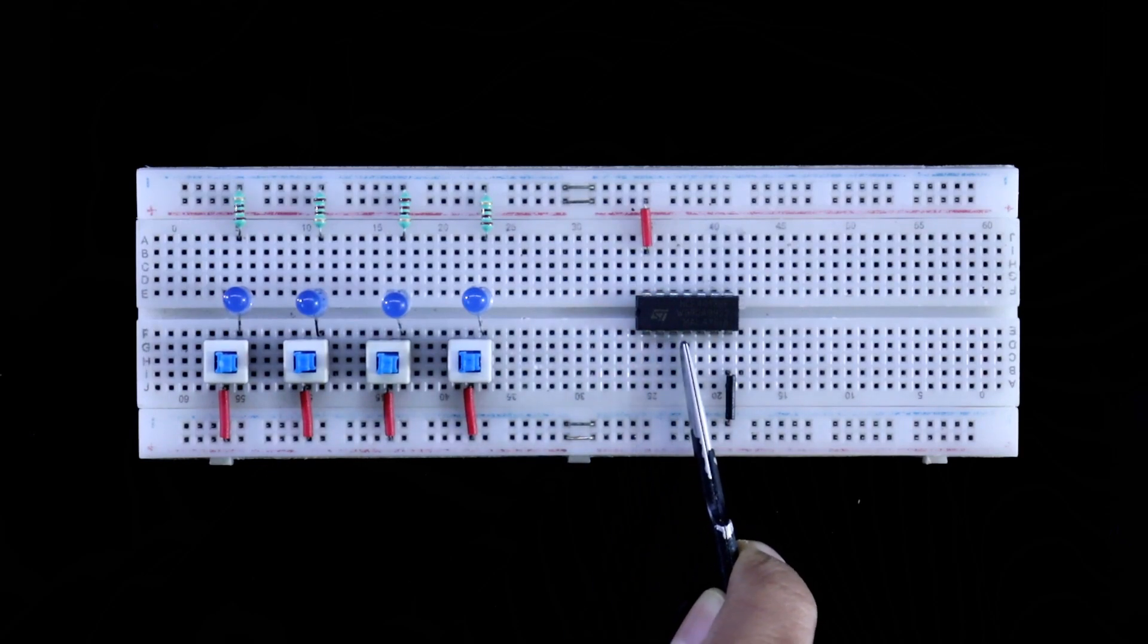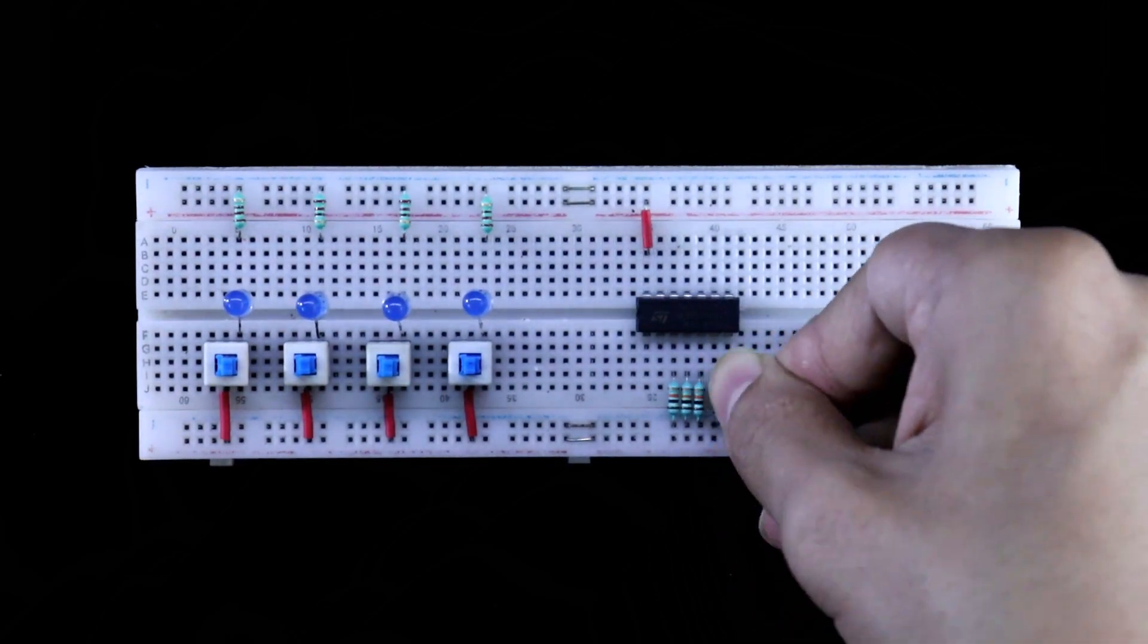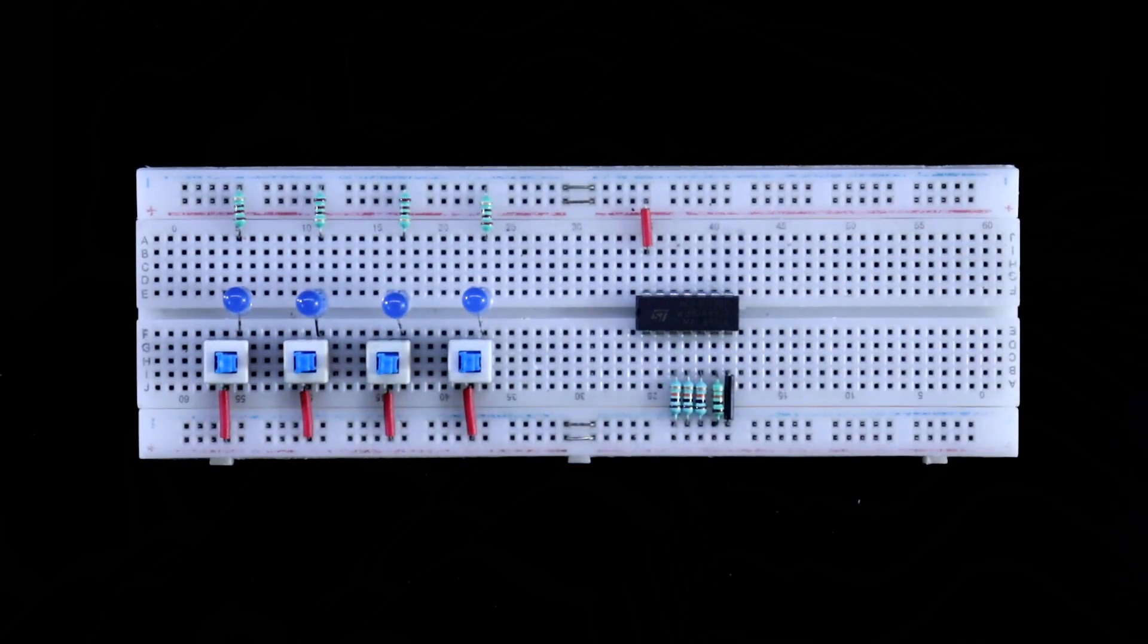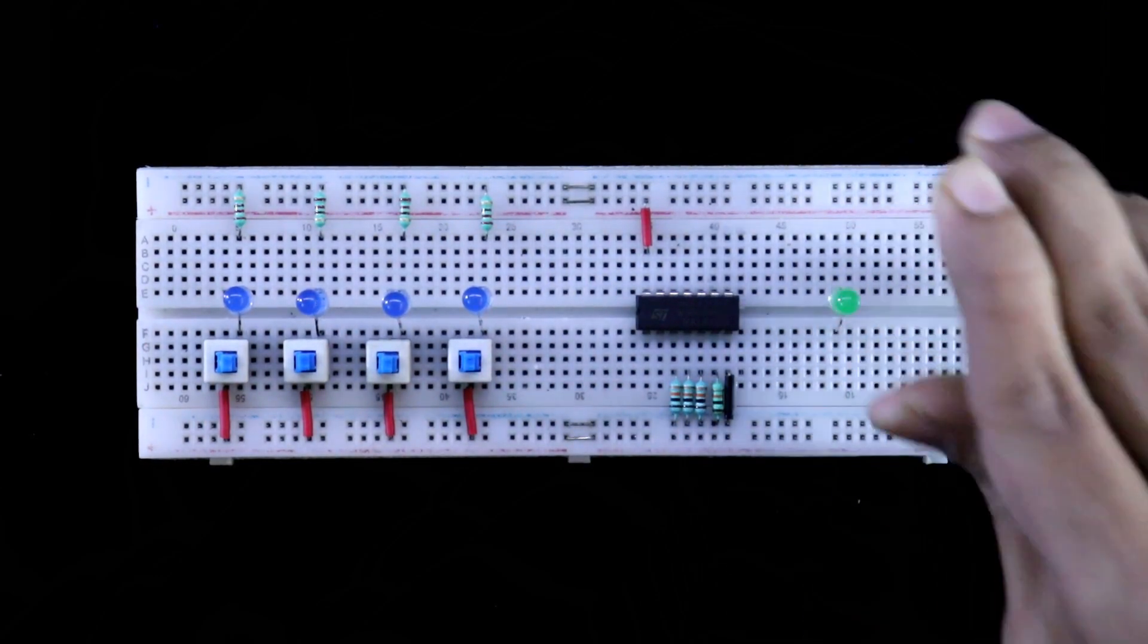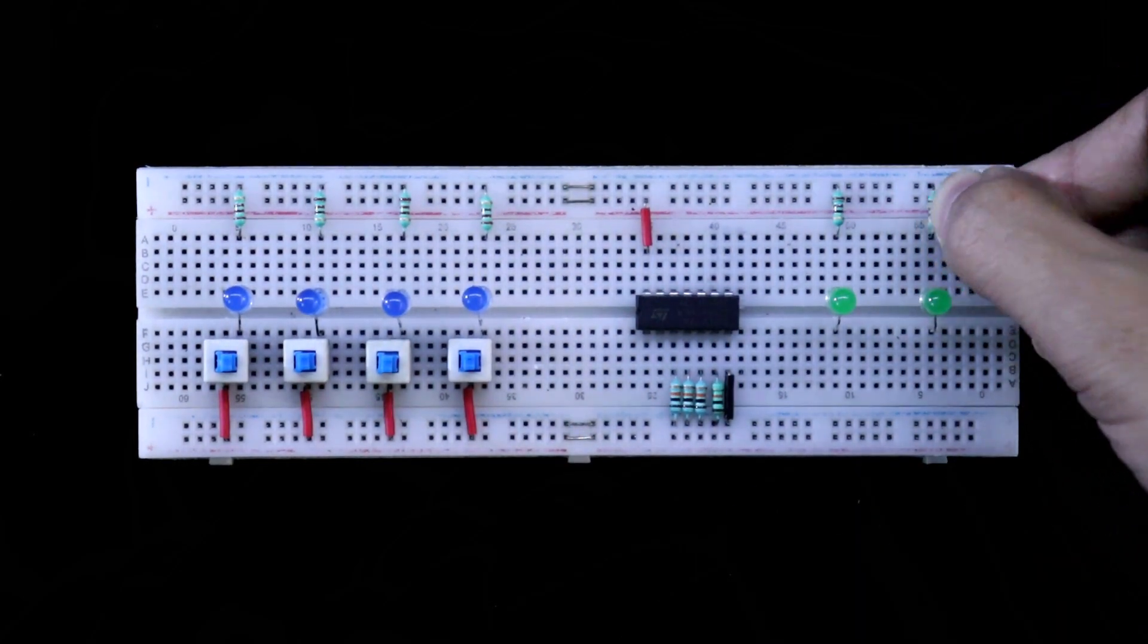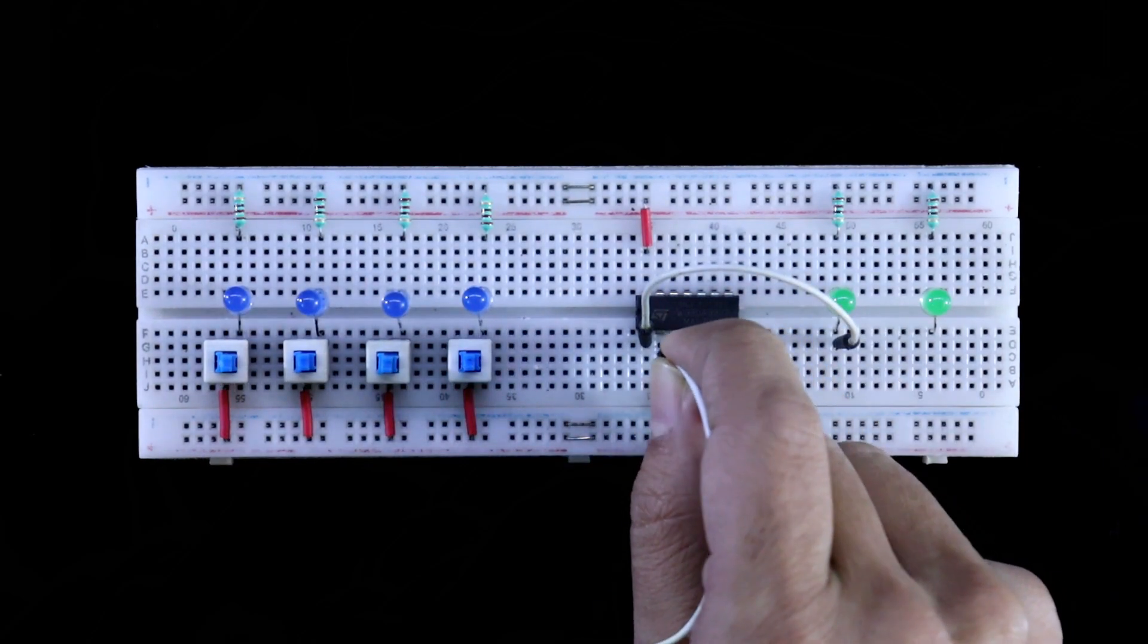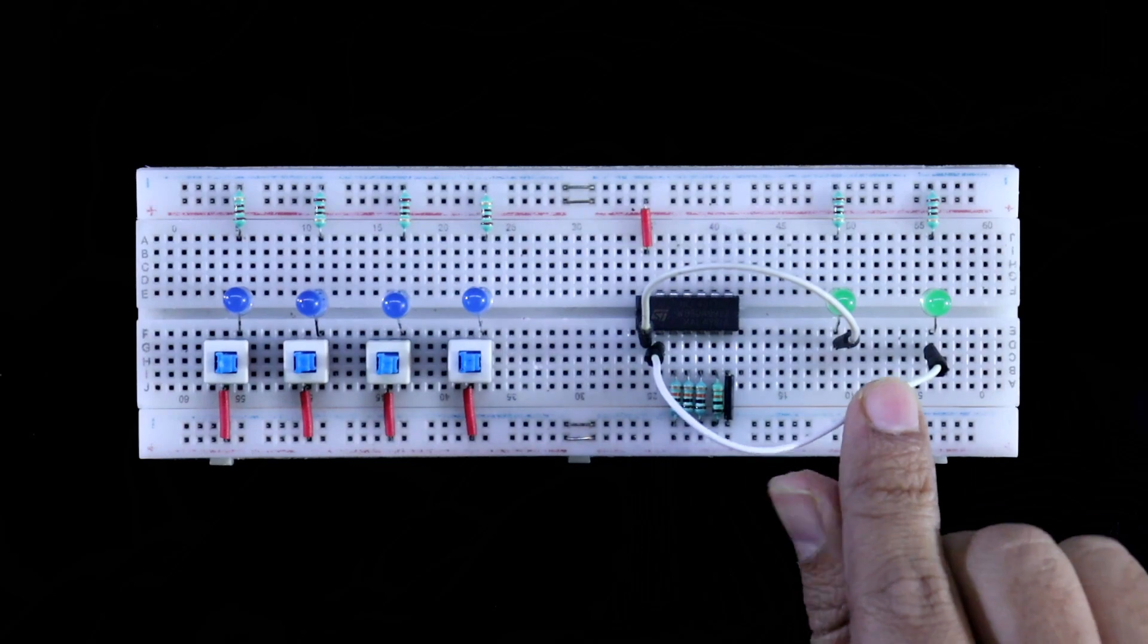As the pin 3, 4, 5 and 6 are the inputs, so we have to connect pull down resistor with it. Putting the output LEDs, here it is Q, Q bar, also the series resistor. Pin 1 is Q, and pin number 2, and it is Q bar.